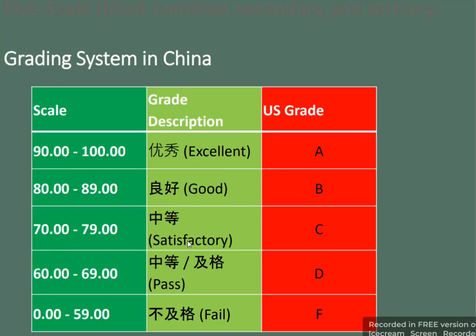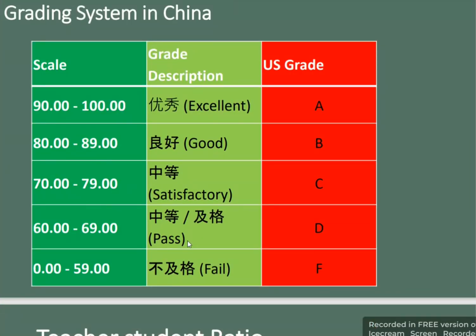The most common secondary and tertiary grading system in China uses the following scale: 90 to 100% is Excellent, grade A; 80 to 89% is Good, grade B; 70 to 79% is Satisfactory, grade C; 60 to 69% is Pass, grade D; and 0 to 59% is Fail, grade F.